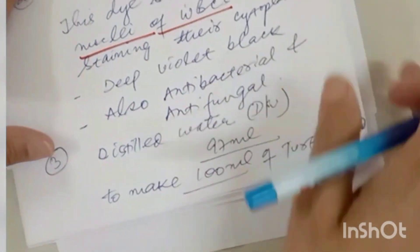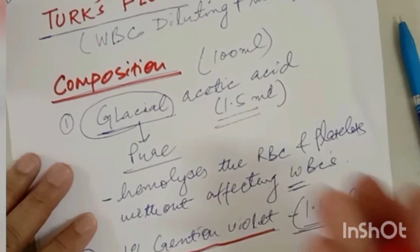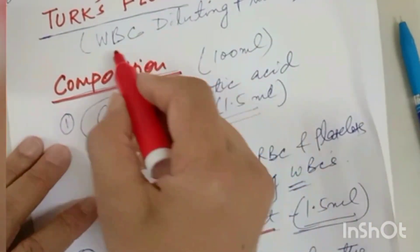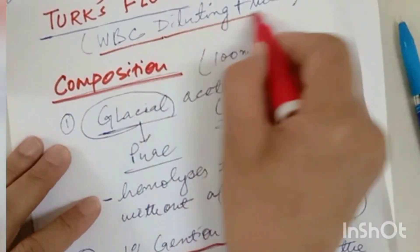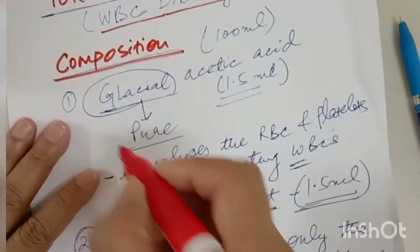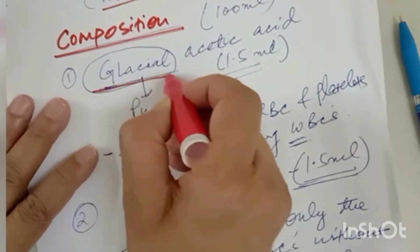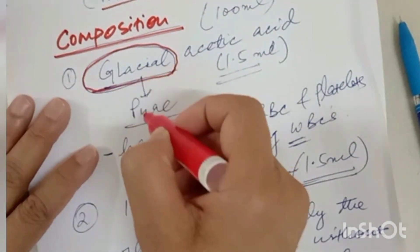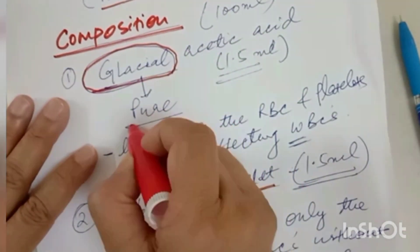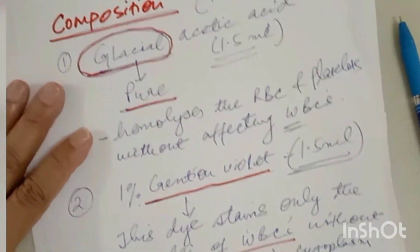This is all about the Turk's fluid, that is the WBC diluting fluid. A very frequently asked question: what does 'glacial' mean? Glacial means the pure form of acetic acid. Thank you very much.